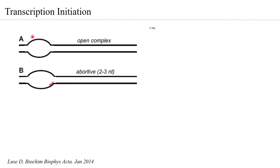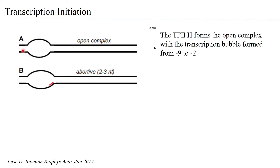When the open complex is formed, the first opening is generally between minus 9 to minus 2. As RNA Pol 2 starts adding nucleotides, the transcription bubble increases to include the transcription start site, and from the transcription start site the RNA begins forming. When about 2 to 3 nucleotides of RNA are formed, there are possibilities of abortive initiation.